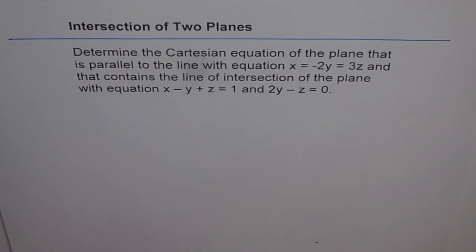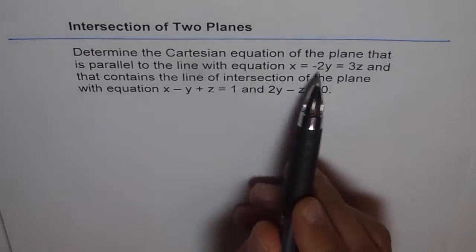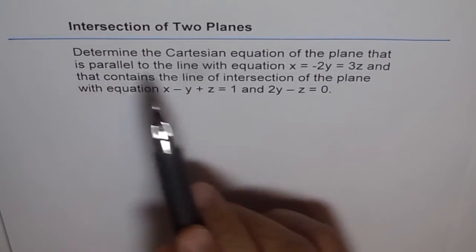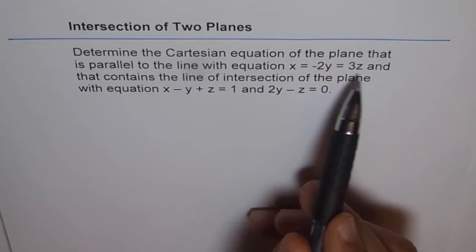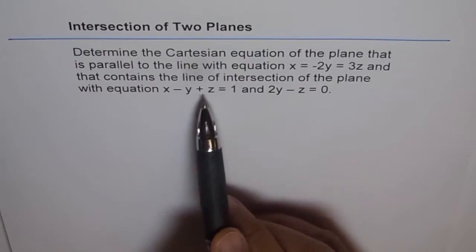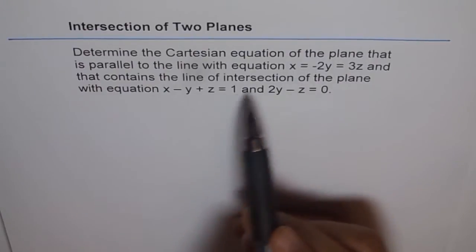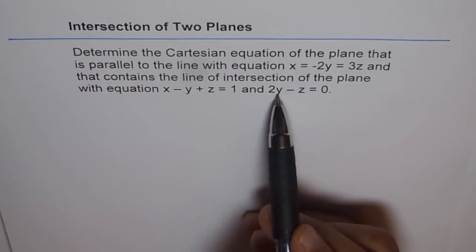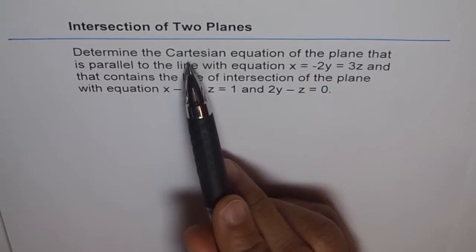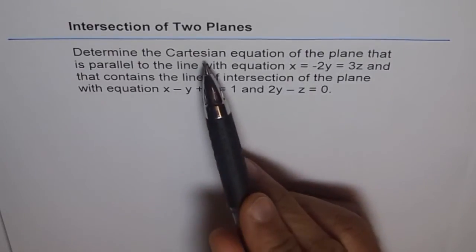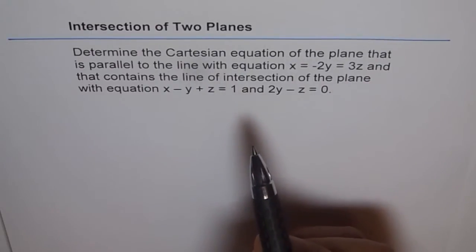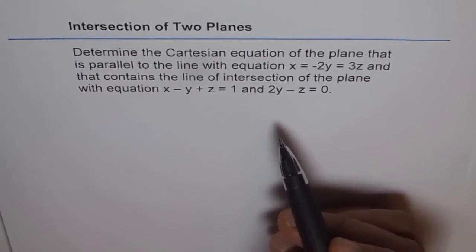The strategy we should follow here is that to find the Cartesian equation of a plane, we need two direction vectors and a point. The given line provides one direction vector since the plane is parallel to it, and the line of intersection of the two planes gives us a point and a second direction vector. We then take the cross product of those two direction vectors to get the normal, and use Ax plus By plus Cz plus D equals 0 to get the Cartesian equation.